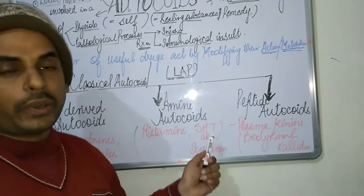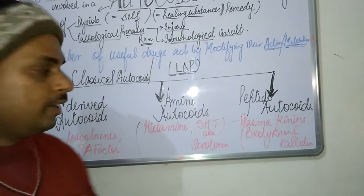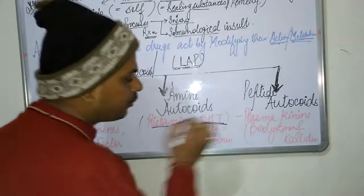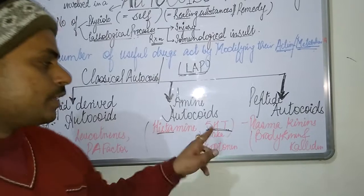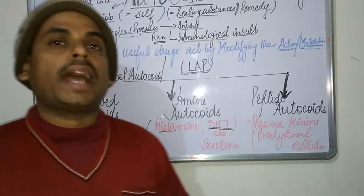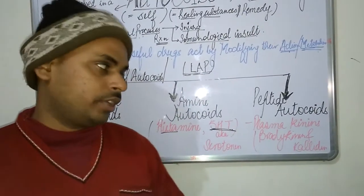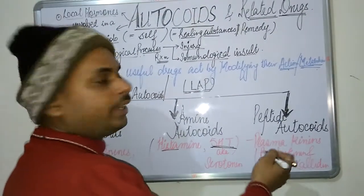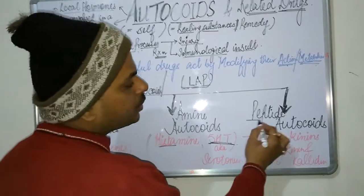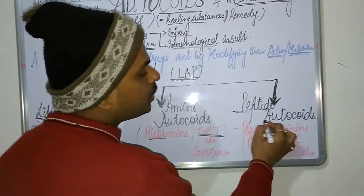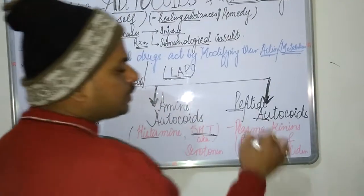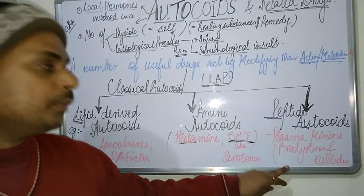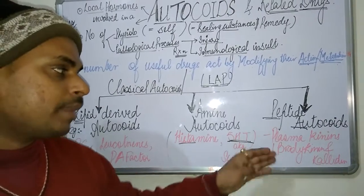Among the amine autocoids, the A of LAP refers to histamine and 5-hydroxytryptamine, which is also called serotonin.